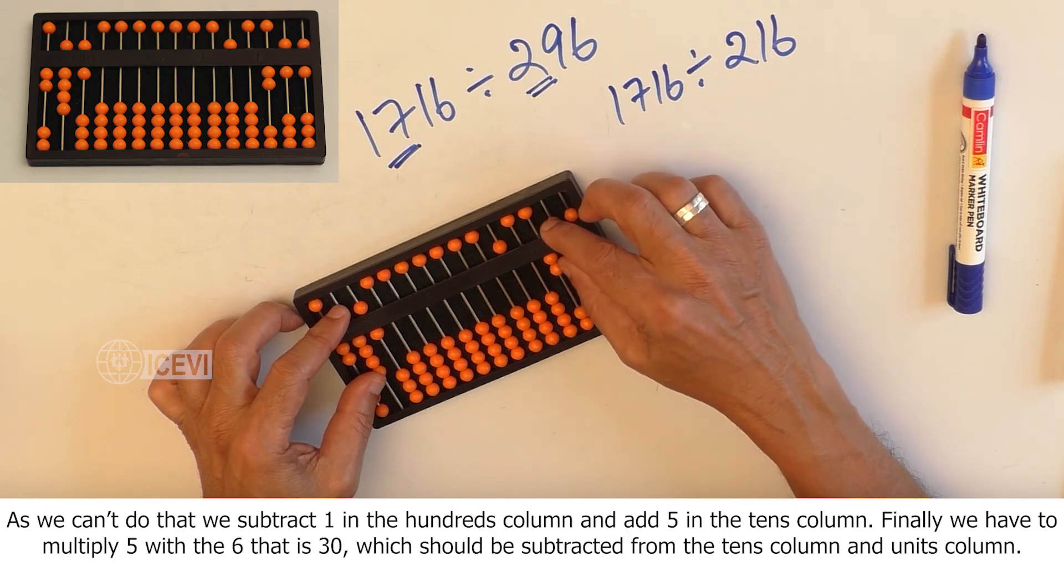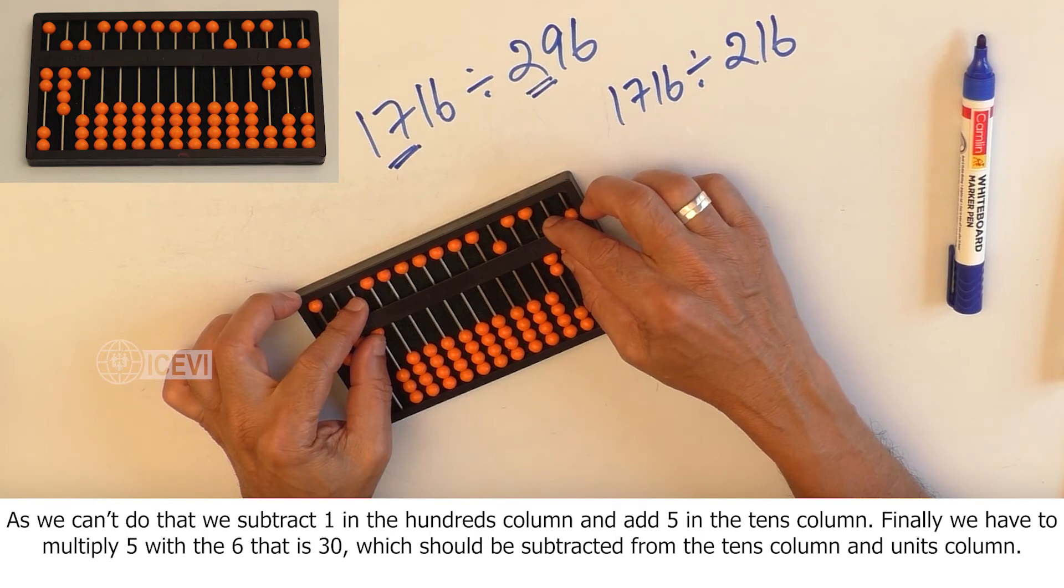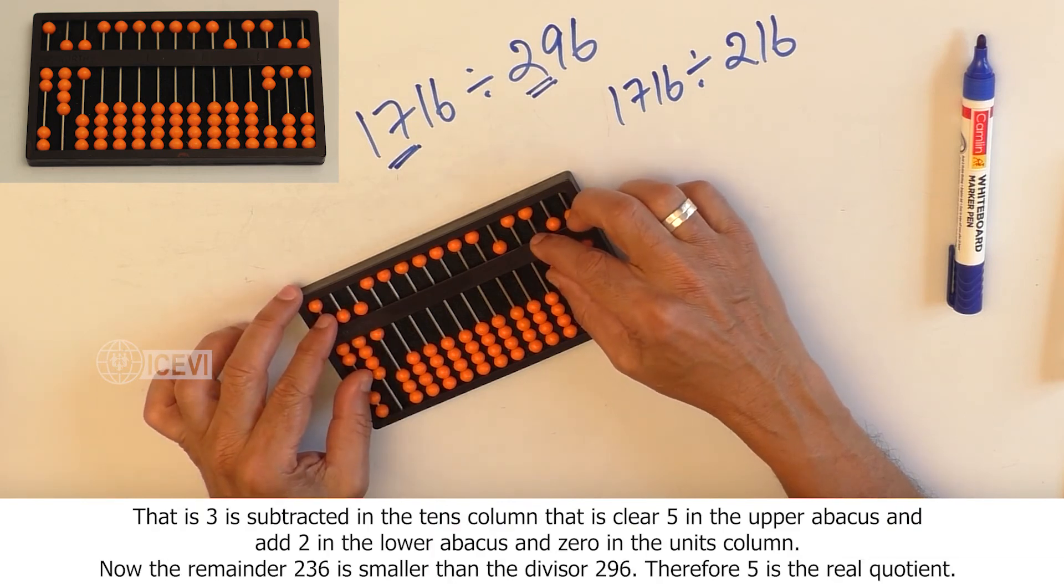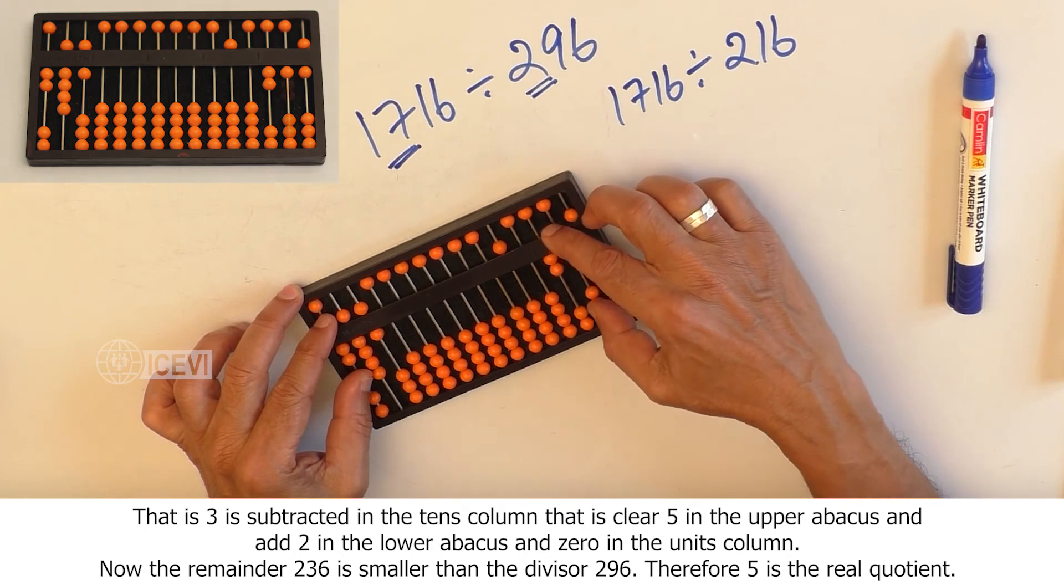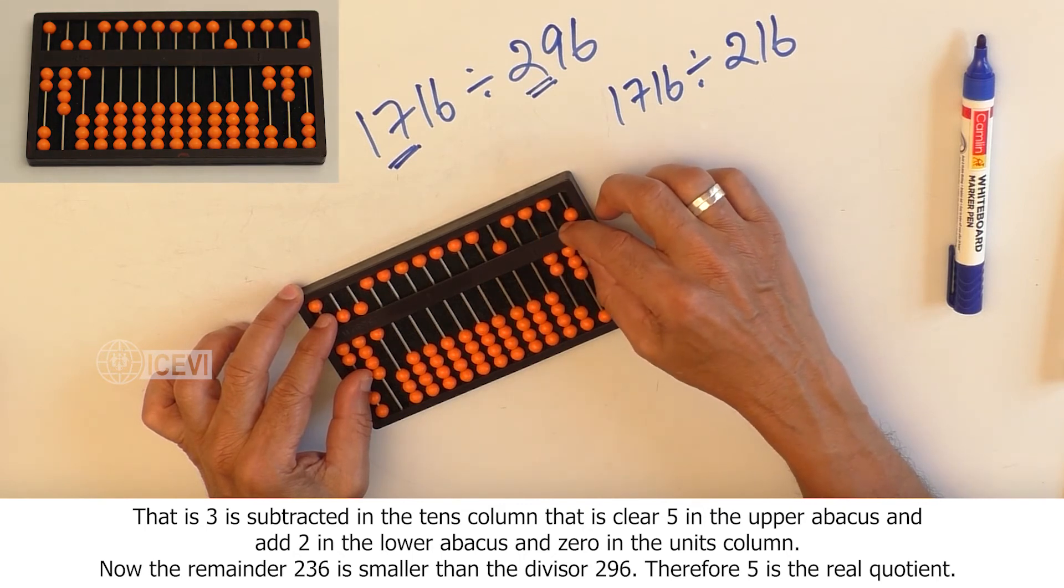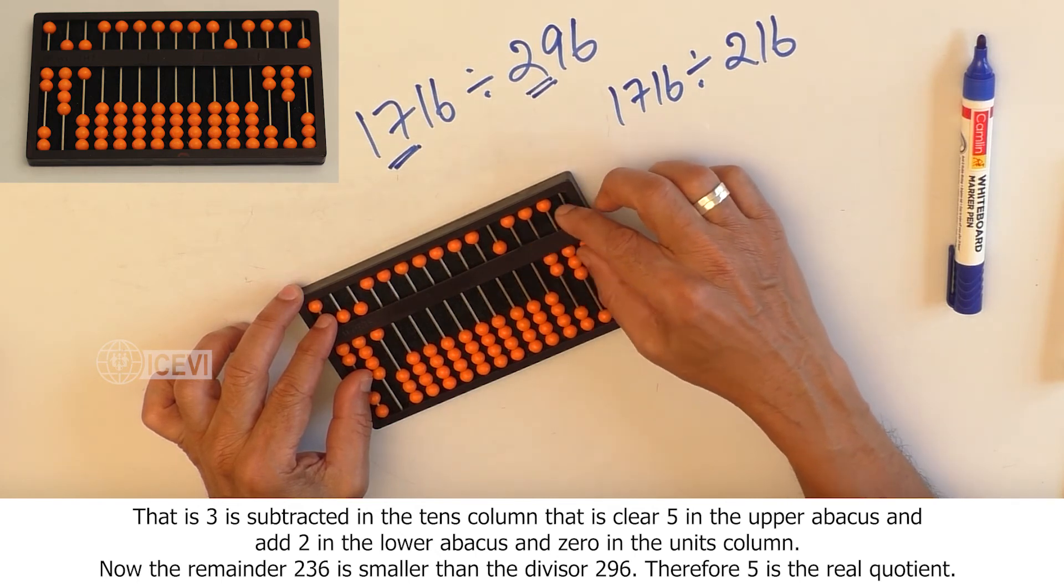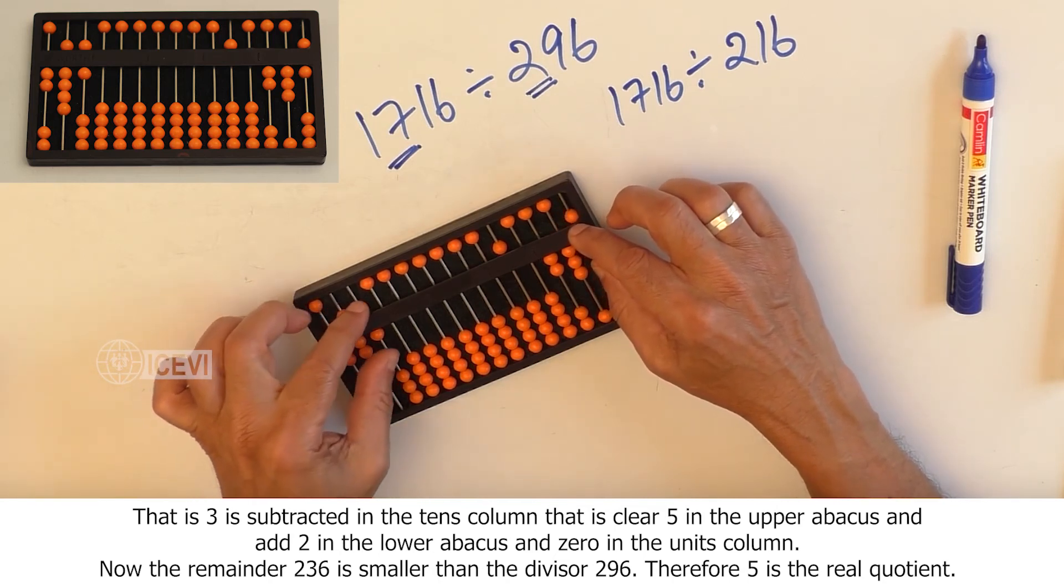Finally, we have to multiply 5 with 6, that is 30, which should be subtracted from the tens column and the units column. That is, 3 subtracted from the tens column - clear 5 and add 2 in the lower abacus - and 0 in the units column. Now, the remainder 236 is smaller than the divisor 296, therefore 5 is the real quotient.